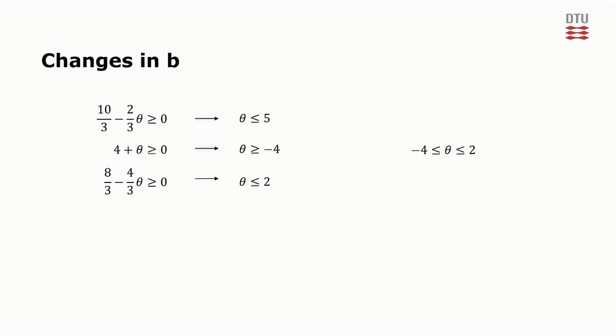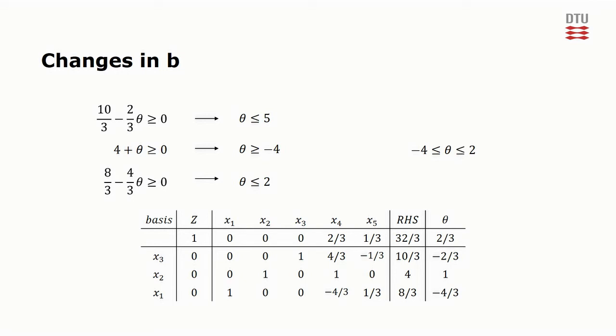If theta was lower than minus 4, the second inequality would not be satisfied. In that case we would need to perform a dual simplex iteration where the exiting variable would be x2 corresponding to the second row which would be the row with a negative right-hand side. Notice however that there are no negative coefficients in that row under the variable columns. This means that the problem is infeasible, i.e. that no solutions exist for theta lower than minus 4.